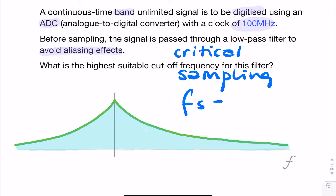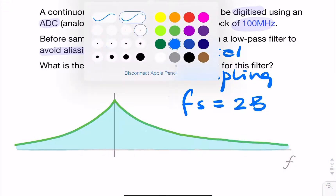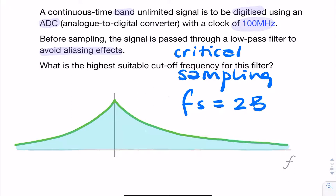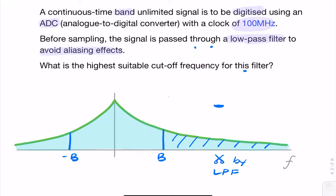Critical sampling means the sample rate should be equal to two times the bandwidth. But since the signal isn't band limited, the bandwidth is what we are going to set. If we apply our low-pass filter at bandwidth B, then we are imposing a bandwidth of B, and everything beyond that will be removed by the low-pass filter — our anti-aliasing filter — removing all frequencies higher than B.